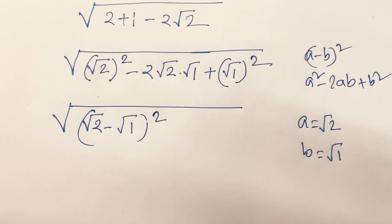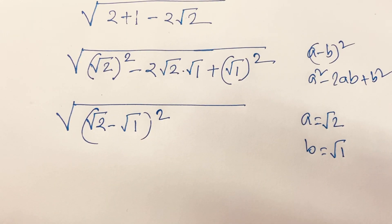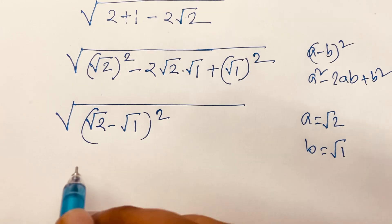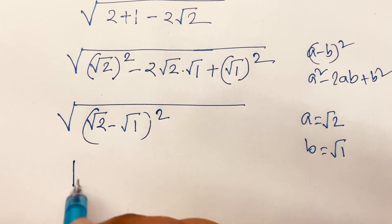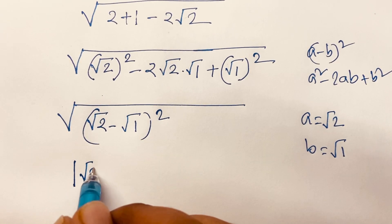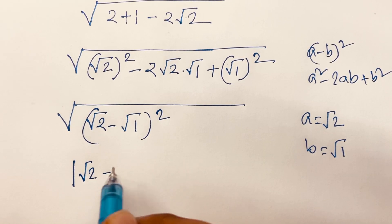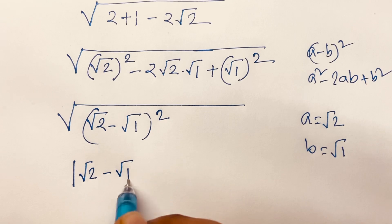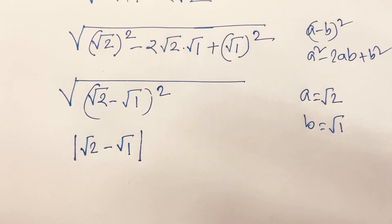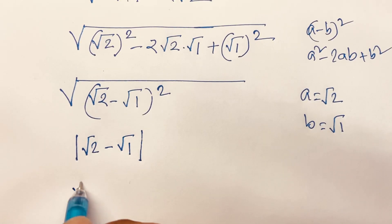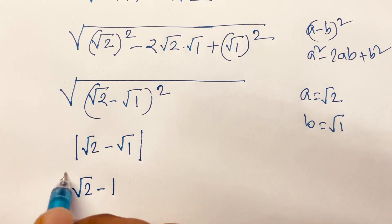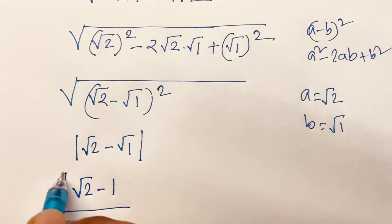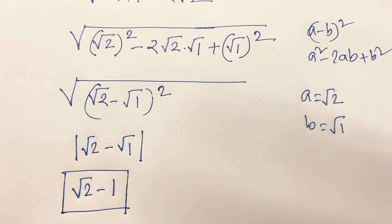The outer square root cancels with the square, so we get √2 minus √1, which equals √2 minus 1. This is our final answer.